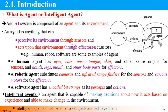The agent takes input from the environment via sensors. The environment is acted upon through the effectors and actuators. The sensor is part of the agent, and the environment is defined by the sensors, effectors, perceptors, and action.